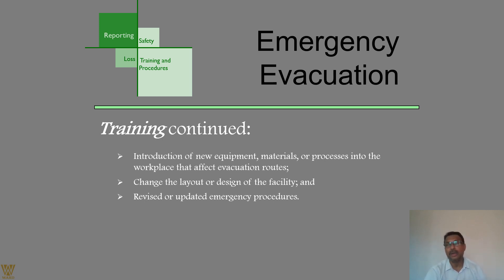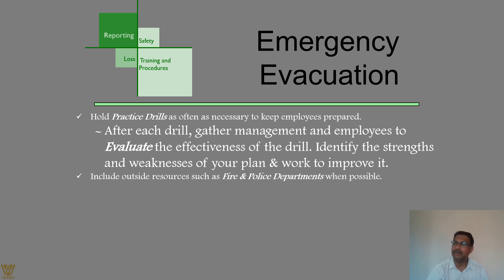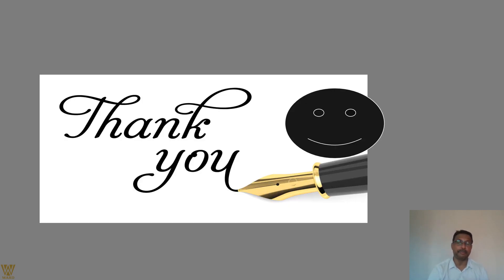Training is also required when changes occur to evacuation routes due to layout redesign — such as changes to vendor areas, storeroom areas, employee or customer entrances. Revised or updated emergency procedures and changes in key personnel contact numbers must also be communicated. Hold practice drills as often as possible, with at least one mandatory drill per year. After each drill, management and employees evaluate the effectiveness, identify strengths and weaknesses, and include external departments such as police or fire services. Every door must open from both sides — both exit and entry — which is critical for emergency evacuation.